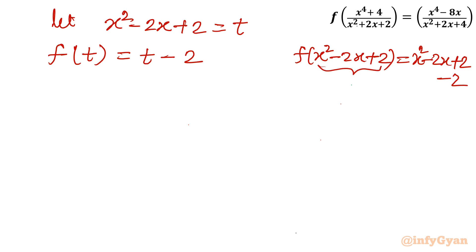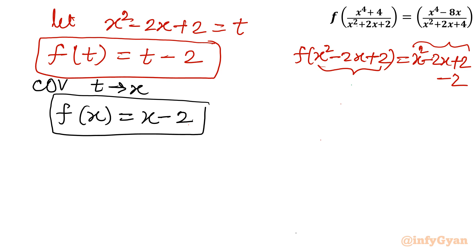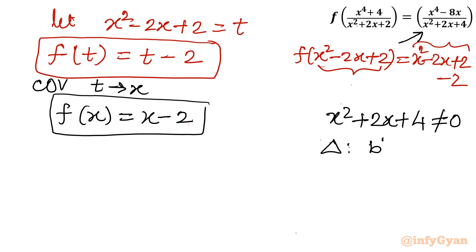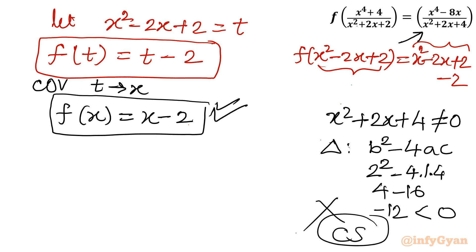We can now replace the variable x² - 2x + 2 with t. Let x² - 2x + 2 = t, so f(t) = t - 2. We can verify: f(x² - 2x + 2) = (x² - 2x + 2) - 2. Now changing the variable — replacing t with x — our answer is f(x) = x - 2. We also confirm that x² + 2x + 4 ≠ 0 for real x, since its discriminant is 4 - 16 = -12, giving complex roots only. So the final answer is f(x) = x - 2.